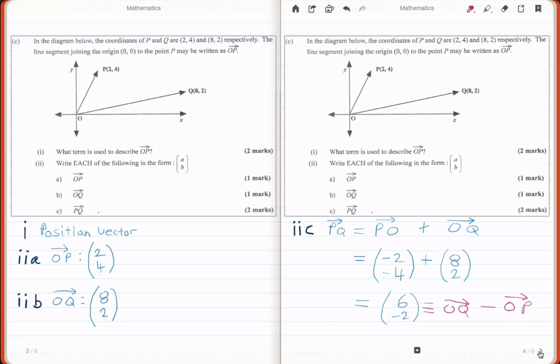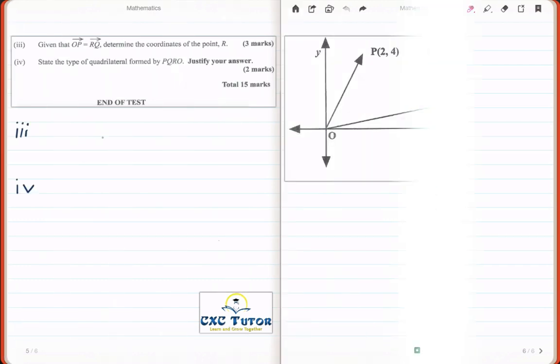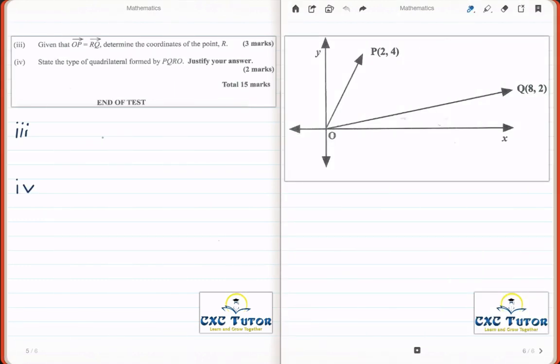Moving on to the next question. Part 3 says, given that OP is equal to RQ, determine the coordinate of the point R. Now, to answer this question, we have to again look at the diagram and realize that if they say OP is equal to RQ,